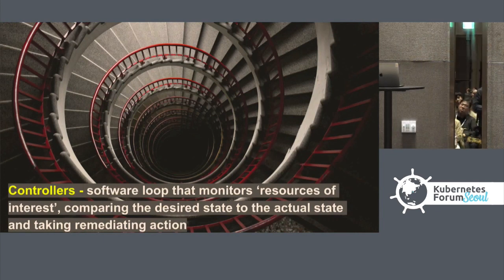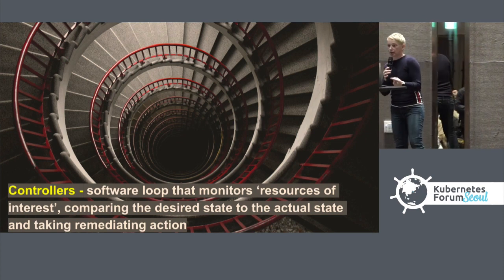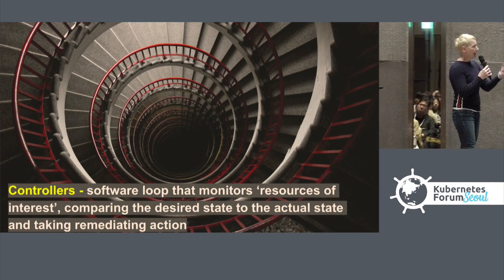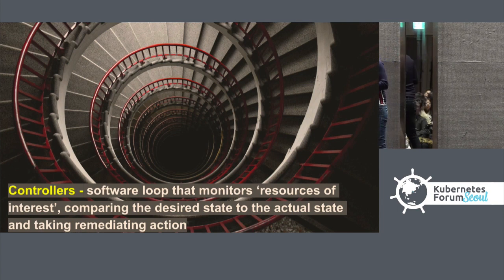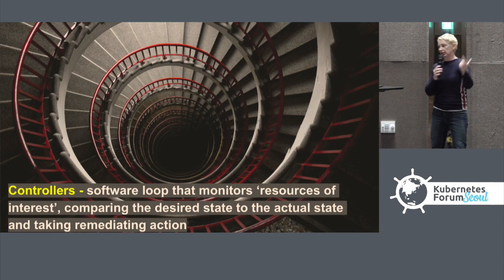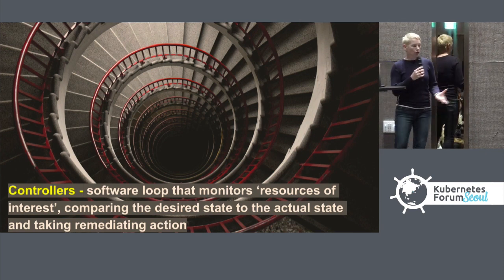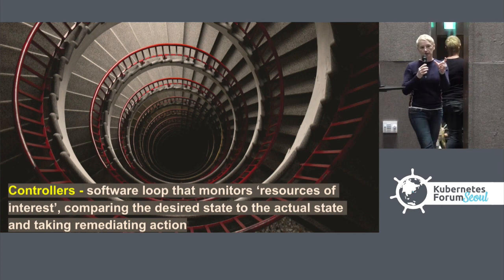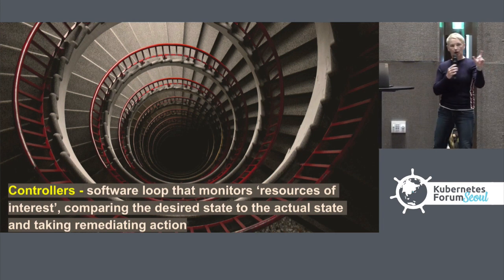The systems that implement this looping mechanism are called controllers, and there's more than one of them in Kubernetes. They're basically pieces of software within the system that monitor resources of interest, whether it's a pod, whether it's a service, whatever the resource of interest you want to check. And it will compare the desired state of that resource to the actual state in real life and try to reconcile both, taking remediation action if something is not matching.